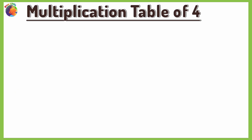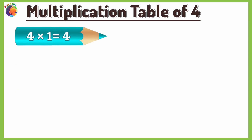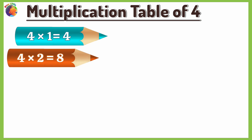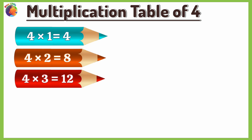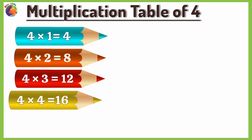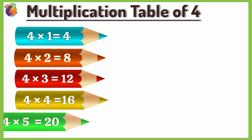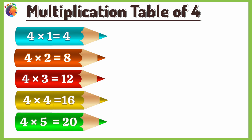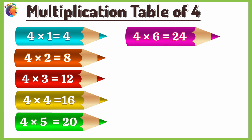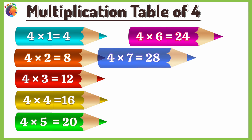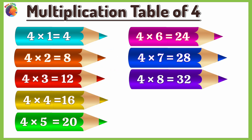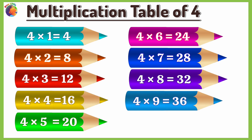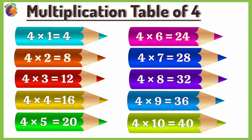Multiplication Table of 4. 4 times 1 is 4, 4 times 2 is 8, 4 times 3 is 12, 4 times 4 is 16, 4 times 5 is 20, 4 times 6 is 24, 4 times 7 is 28, 4 times 8 is 32, 4 times 9 is 36, 4 times 10 is 40.